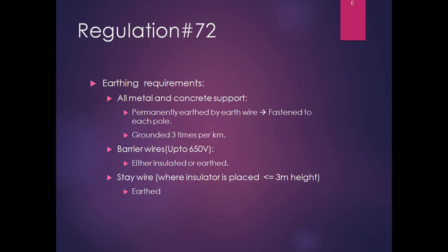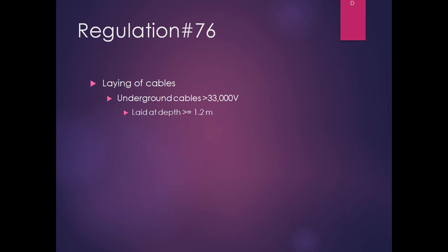Regulation 72 covers earthing requirements. All metal and concrete supports shall be permanently earthed by earth wire fastened to each pole so that each pole is in contact with earth. The earth wire shall be grounded at least three times per kilometer and, as far as possible, at equidistant locations. Barrier wires up to 650 volt shall be either insulated or earthed. Stay wires where the insulator is placed less than 3 meter in height shall also be earthed. Underground cables of system voltage exceeding 33 kV shall be laid at a depth not less than 1.2 meter.